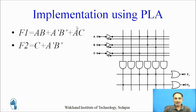So function F1 uses three AND gates to generate its three product terms, and they are ORed together using three intact fuses — the remaining fuses are blown. The output of this OR gate is F1 = AB + A'B' + AC.